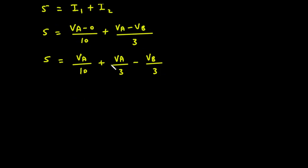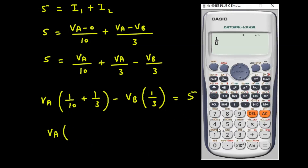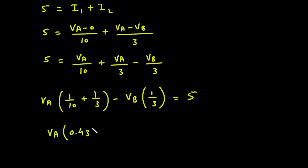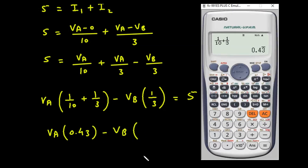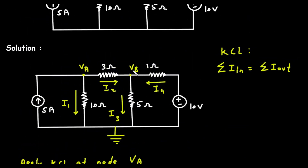Taking VA common, we write VA(1/10 + 1/3) minus VB(1/3) equals 5. Simplifying: VA(0.43) − VB(0.3) = 5. This is equation number 1. Next we will apply KCL at node VB.